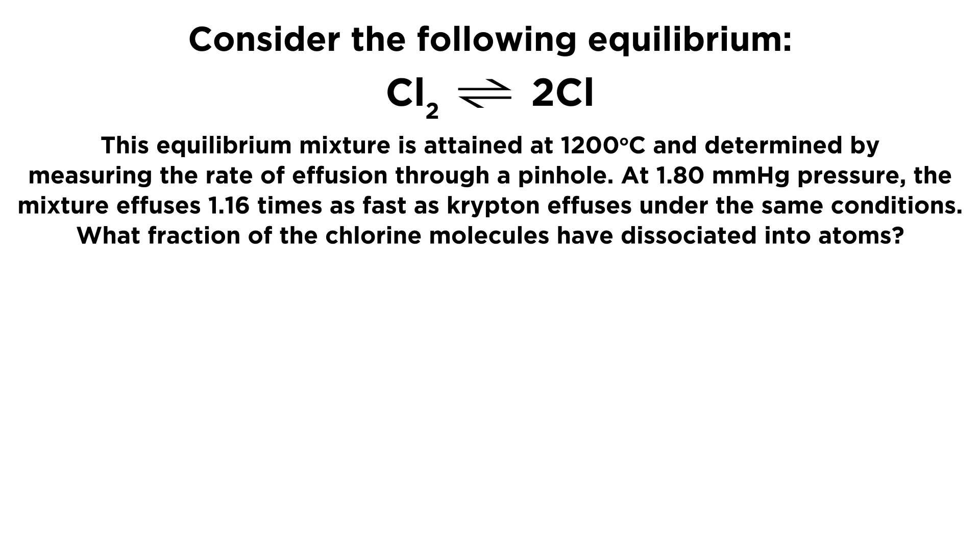And then the question asks, this equilibrium mixture is attained at 1200 degrees Celsius and determined by measuring the rate of effusion through a pinhole. So we're trying to figure out how much of each species is there simply by looking at the rate of effusion through a pinhole. At 1.80 mmHg pressure, the mixture effuses 1.16 times as fast as krypton effuses under the same conditions. What fraction of the chlorine molecules have dissociated into atoms?